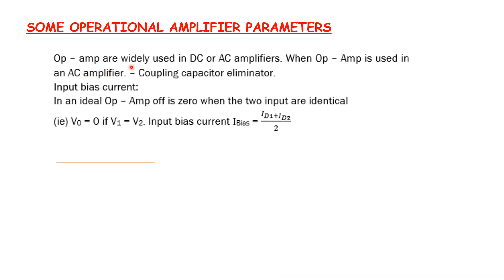Operational amplifiers are widely used in DC or AC amplifiers. An operational amplifier, or op-amp, is a very high gain differential amplifier with high input impedance and low output impedance — input is higher, output is lower.